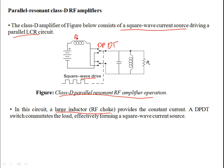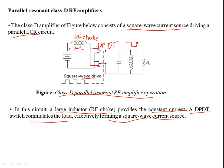In the parallel Class D circuit there is a very large RF choke. The purpose of the choke is to block any AC signal while passing DC as constant current — its inductive reactance jωL at AC is very high. So the DC choke provides a constant current at its terminals. The double pole double throw switch commutates the load, effectively forming a square wave current source driving the parallel LCR circuit.